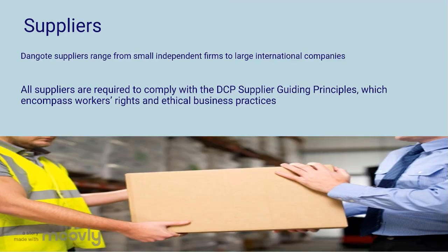Suppliers of raw materials that Dangote Cement cannot extract from quarries are required to comply with the DCP supplier guiding principles, which encompass workers' rights and ethical business practices. Dangote's suppliers range from small independent firms to large international companies, and Dangote Cement chooses its suppliers based on the price they offer.